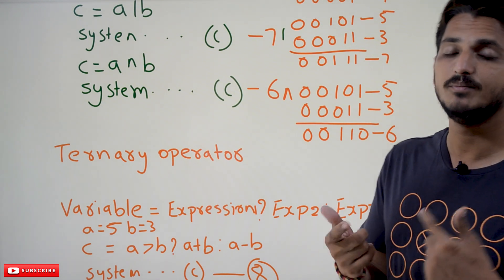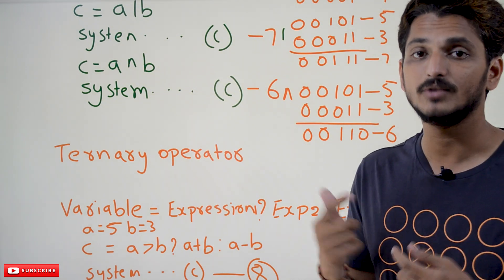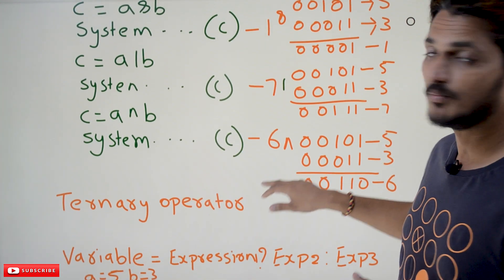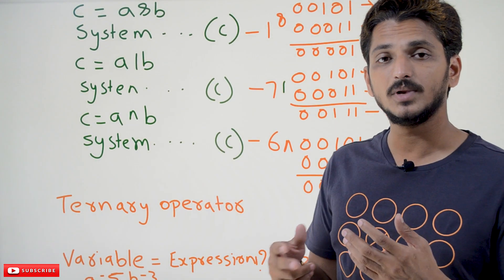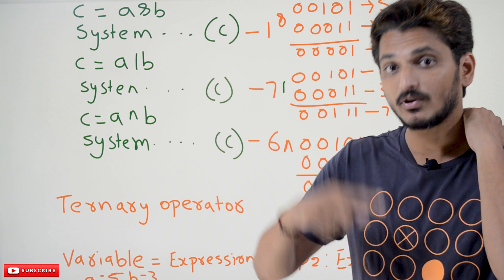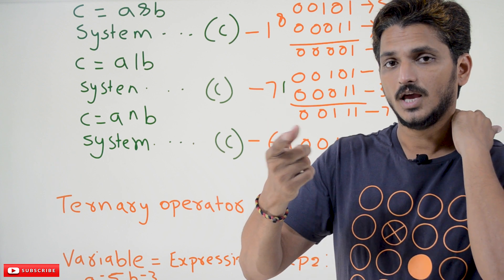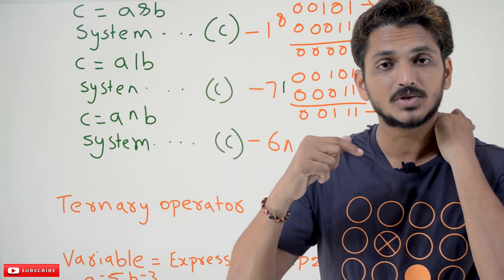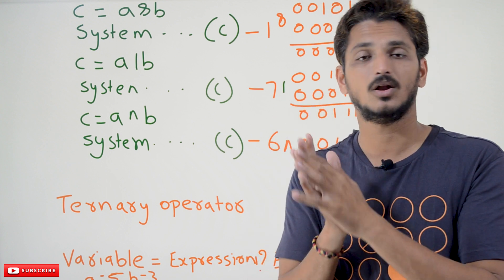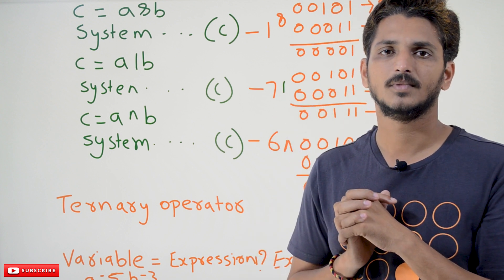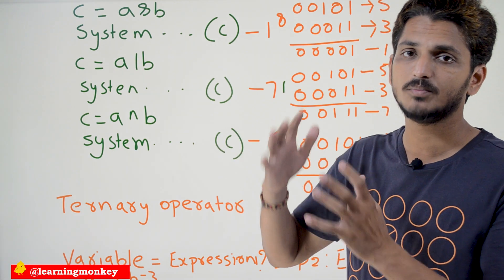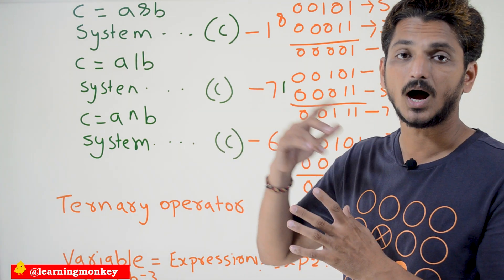In many computer networking applications, we do bitwise AND and OR operations. In order to do encryption and decryption, we are going to use these bitwise AND and OR operators. That is why these operators are very, very helpful in security-purpose applications.